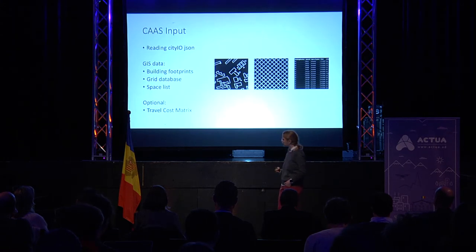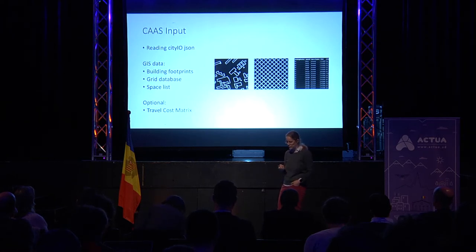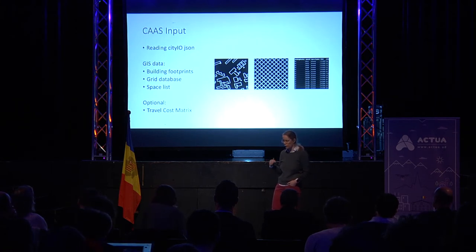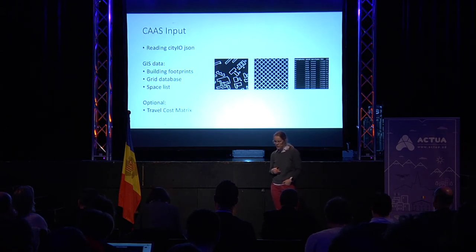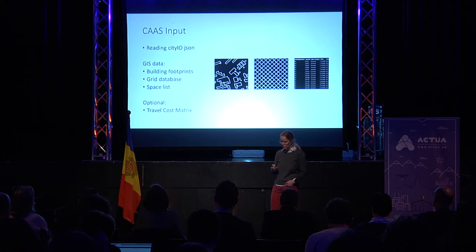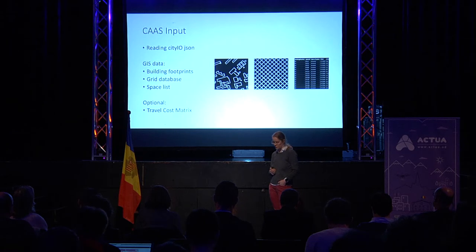For input, the model reads the city.io.json — the CityScope table information. We need building footprints, a grid database, and the space list of all space resources we utilize in the model. We also have an optional travel cost matrix, which could be a distance value or a more general travel cost, or even the space rents.